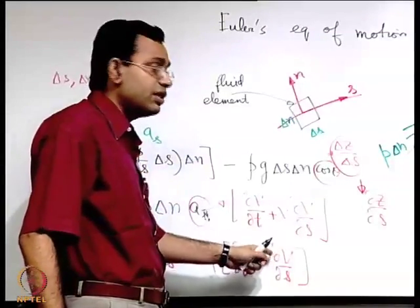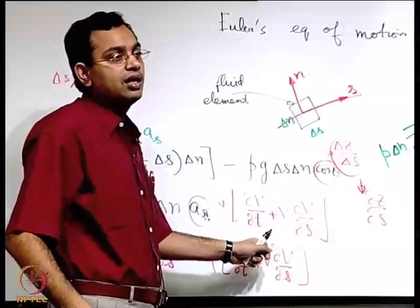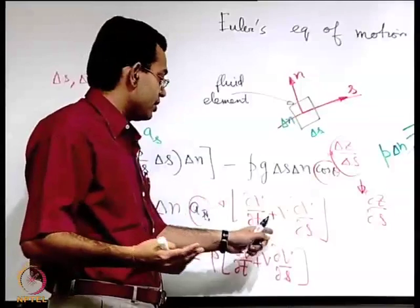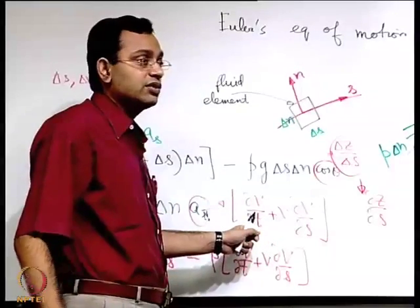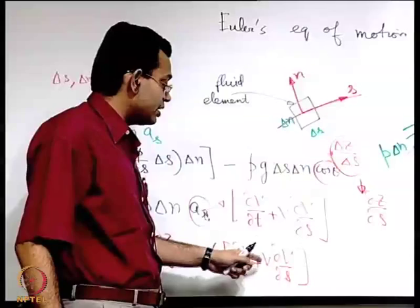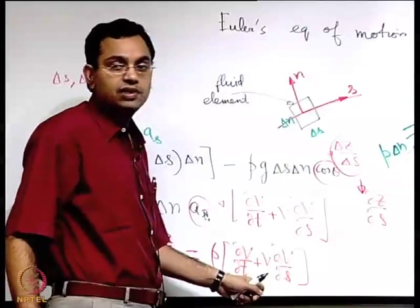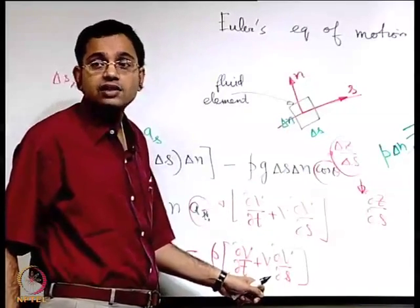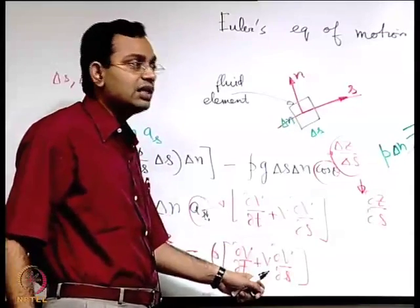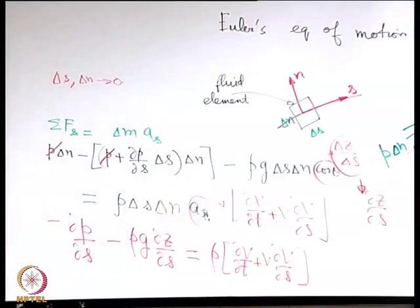For the steady case, the partial derivative and total derivative become equivalent since v is only a function of s. For unsteady cases, the unsteady term rho*(partial dv/dt) must be retained and cannot be dropped.